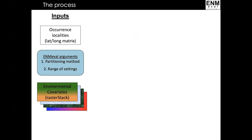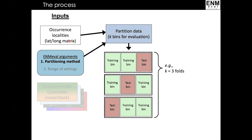Now we move to this schematic diagram to show the process of how ENM-Eval works. We start with our point occurrence data, and the first thing we do is choose a method for partitioning the data for evaluation. We typically make several data partitions equal to k, and ENM-Eval contains six methods for partitioning data.